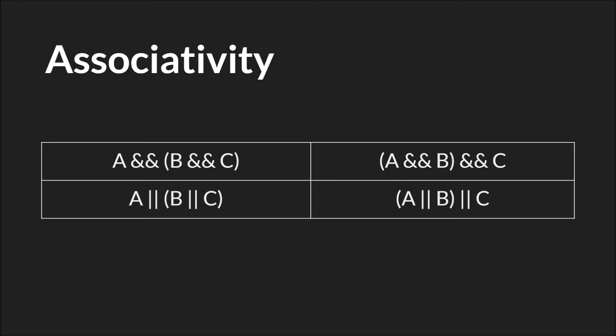So associativity is the first one, and this one is straightforward. Saying A and B and C, or A and B and C is the exact same thing. You won't get a different outcome if you evaluate these two first, and then the result of these two with this one, or these two, and the result of that with this. Because obviously if any one of these things are false, this whole thing will evaluate to false in either case. They'll only evaluate to true if all of them are true.